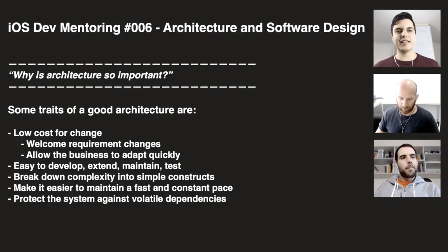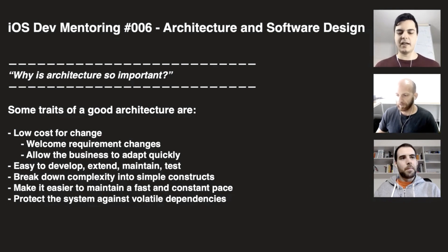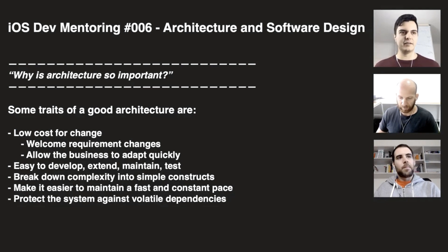You also want to protect the system against volatile dependencies, like third-party dependencies — frameworks that might stop working, or they might have bugs, or they might fall behind in language updates. And you should be able to replace them easily. You should not depend on third-party code.